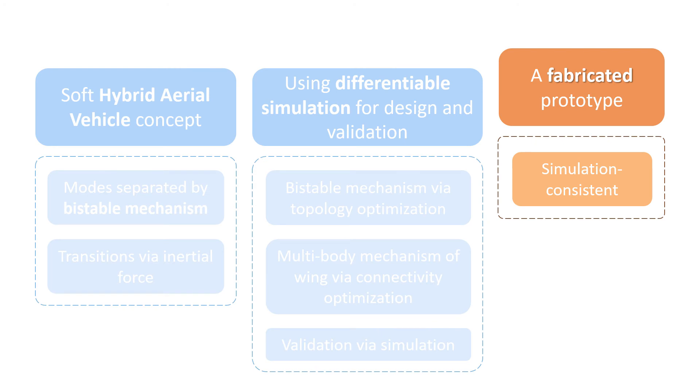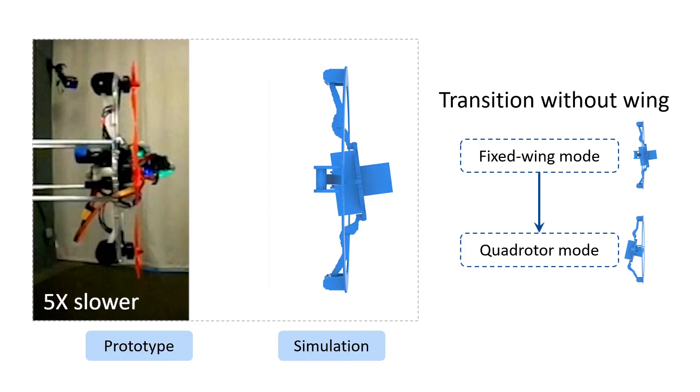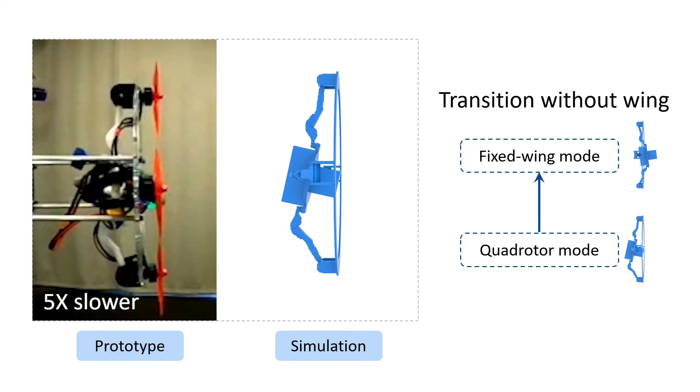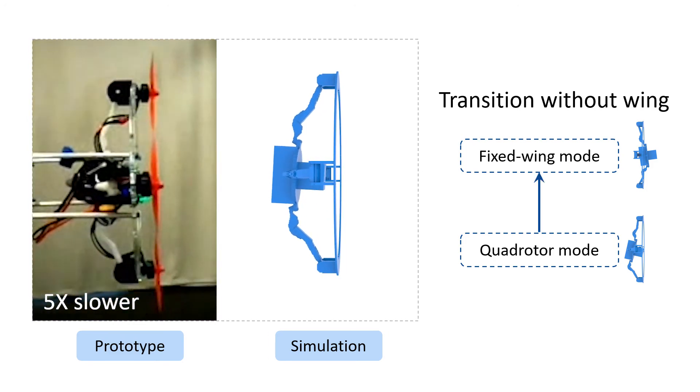Now, we show our experimental results on a fabricated prototype. We mount the HAV without wings to the end of a low-friction boom. The transition from fixed-wing to quadrotor is compared with simulation. And the transition from quadrotor to fixed-wing.